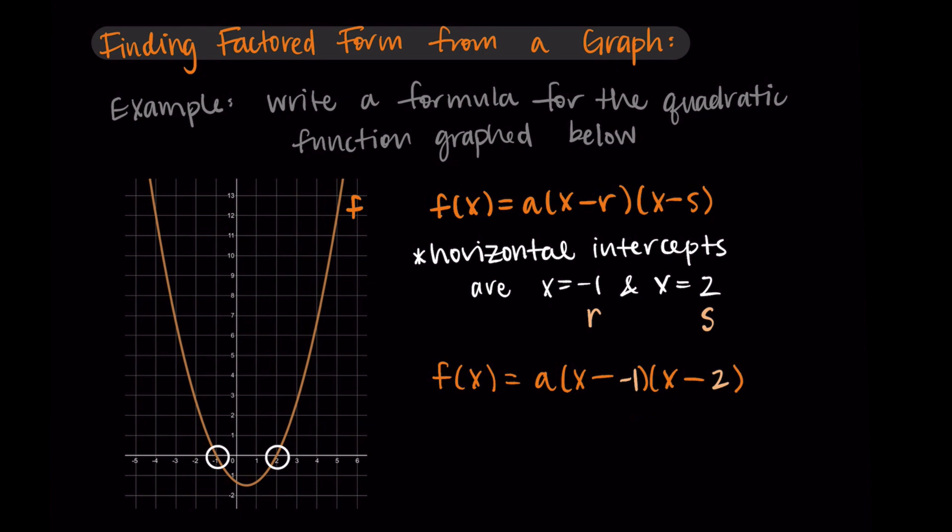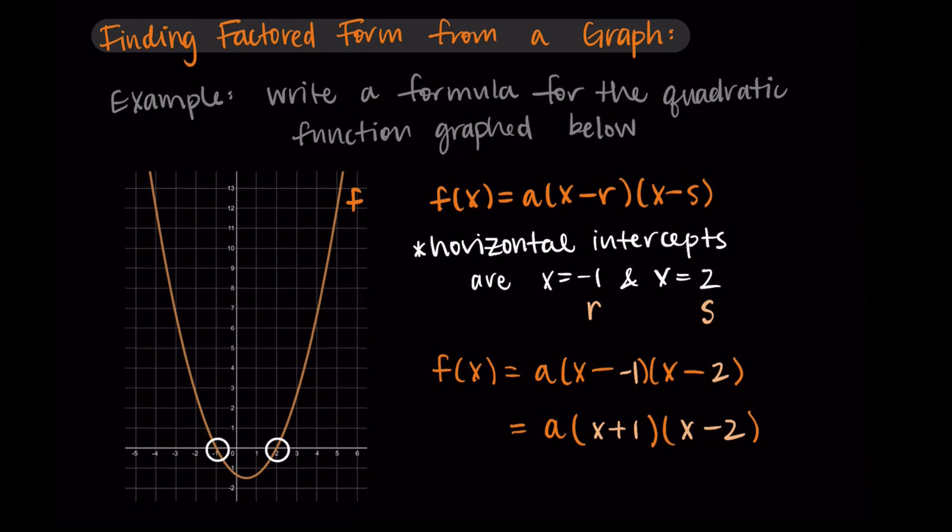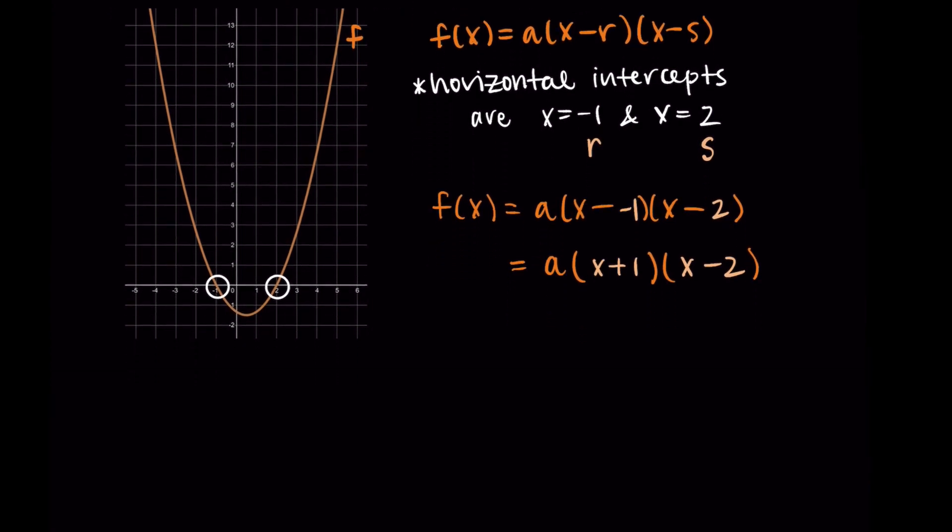Then I might rewrite the minus a negative as a plus. So I'll write a(x + 1)(x - 2). So we're super close, we have everything except the a value. This is where this process is similar to what we did for vertex form. We're going to substitute any point that we know on the graph, and then solve to find a.